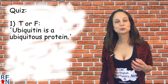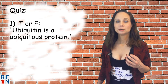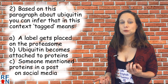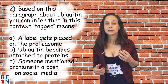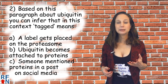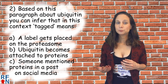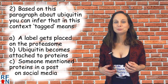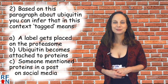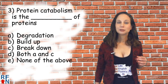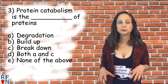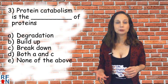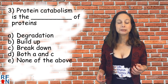Okay, now it's time for the quiz. Number one — true or false: ubiquitin is a ubiquitous protein. Number two — based on this paragraph about ubiquitin, you can infer that in this context 'tagged' means: a) a label gets placed on a proteasome, b) ubiquitin becomes attached to proteins, or c) someone mentioned proteins in a post on social media. Number three — protein catabolism is the blank of proteins: a) degradation, b) buildup, c) breakdown, d) both a and c, or e) none of the above.